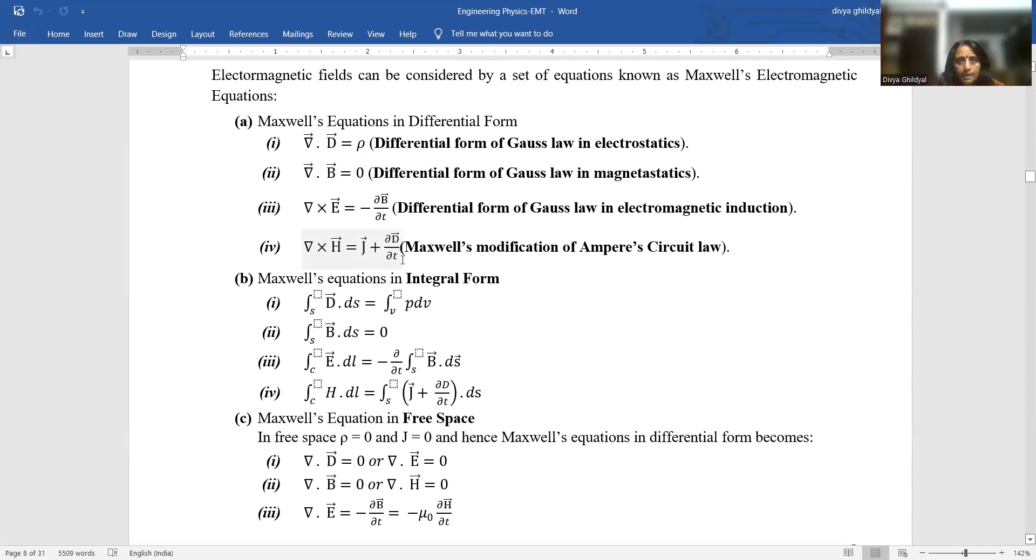Last, fourth equation: Maxwell's modified form of Ampere circuital law. Here in this, you will see one extra factor del D by del T added to your famous Maxwell's equation. Del cross H equal to J plus del D by del T. This is Maxwell's modification of Ampere circuital law. In integral form, these four equations are written like this.